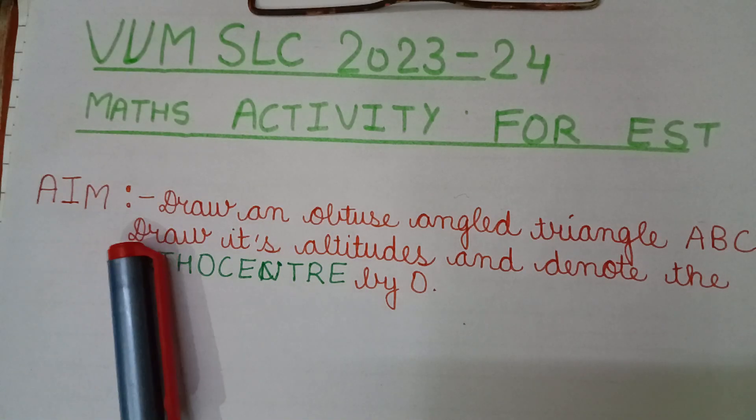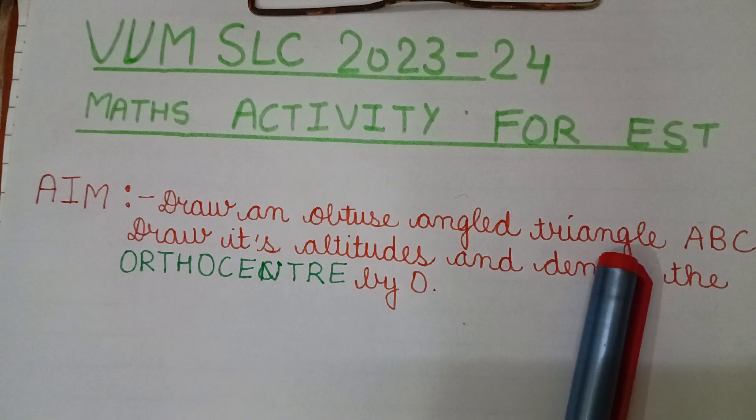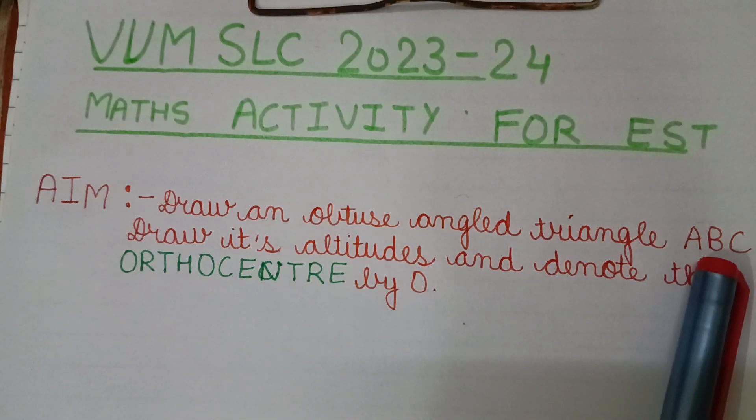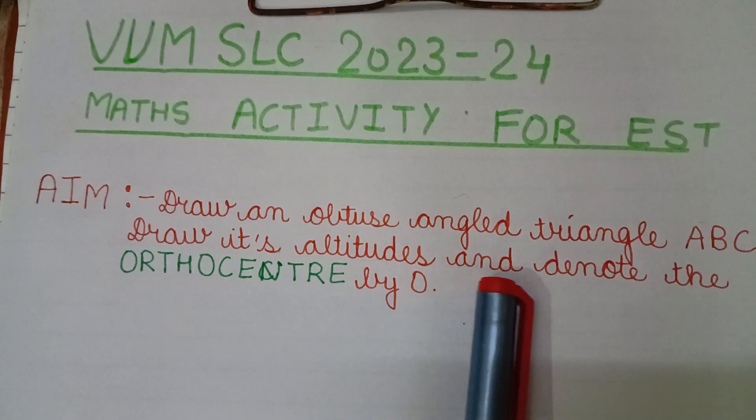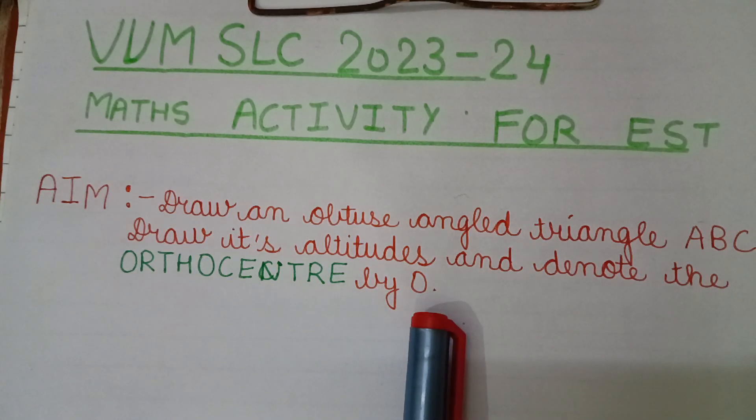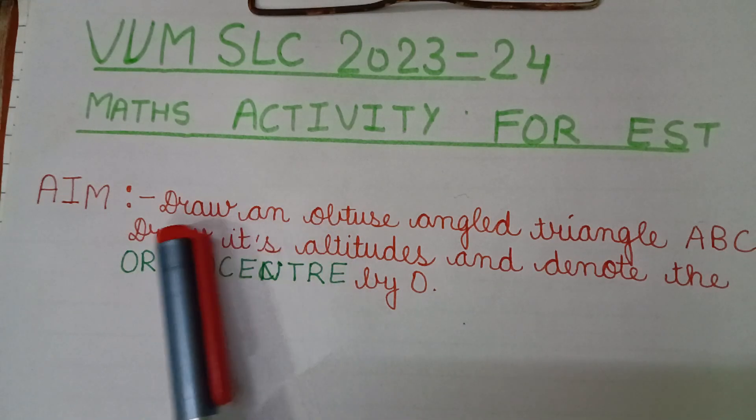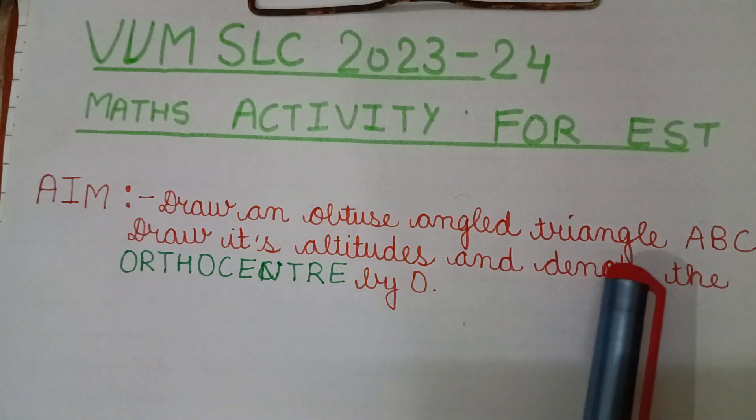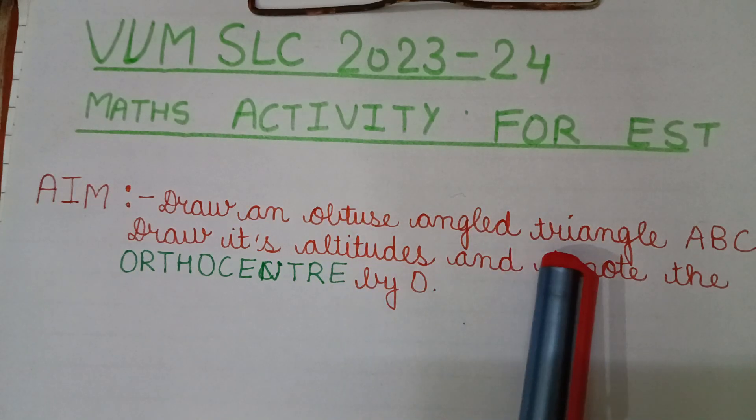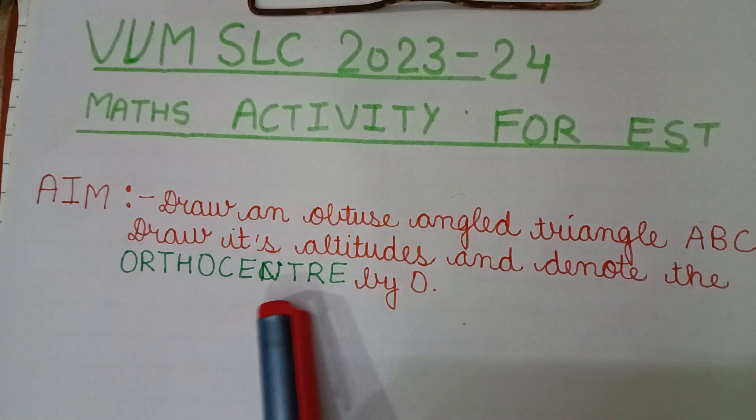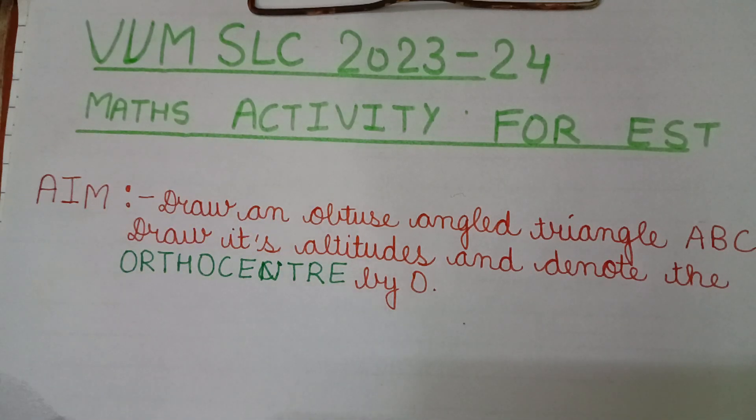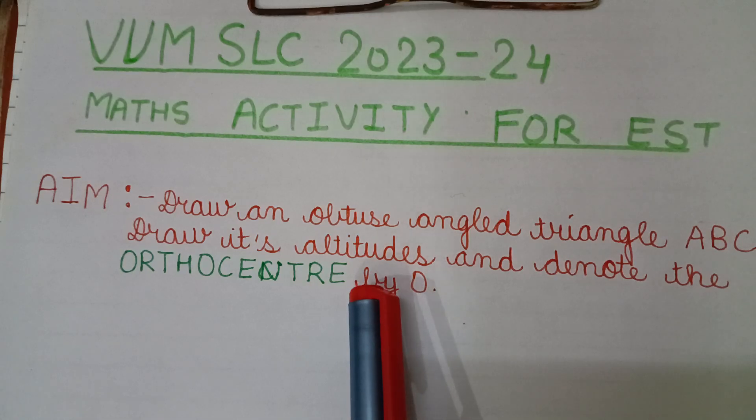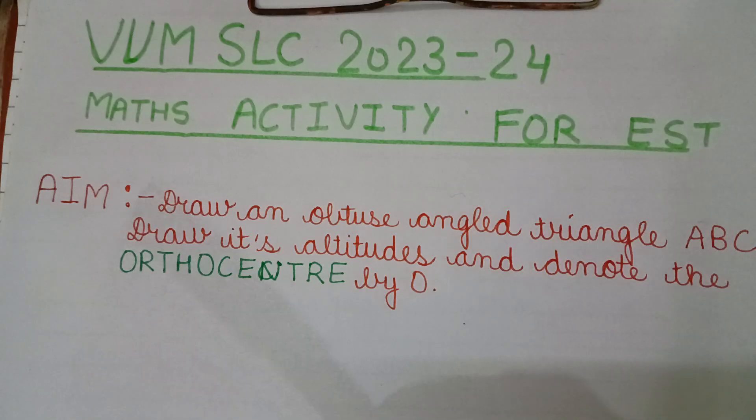This activity aim is to draw an obtuse angle triangle ABC, draw its altitudes and denote the orthocenter by O. You have to point out the orthocenter of the obtuse angle triangle. What is the orthocenter? Orthocenter is the intersection point of the perpendicular drawn by the vertices from the vertices to the opposite side. In this activity, we learn about this.